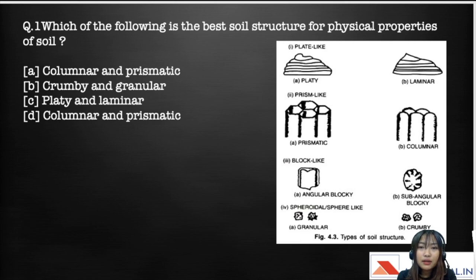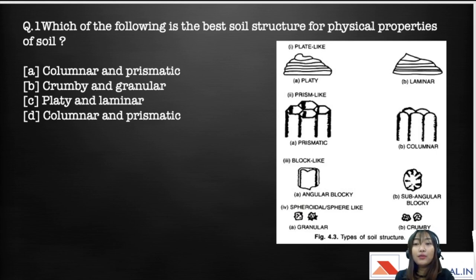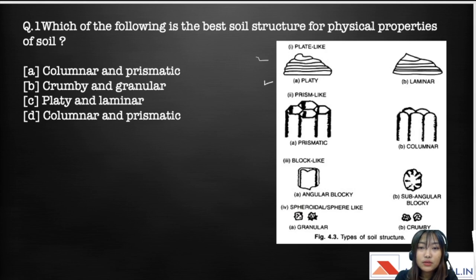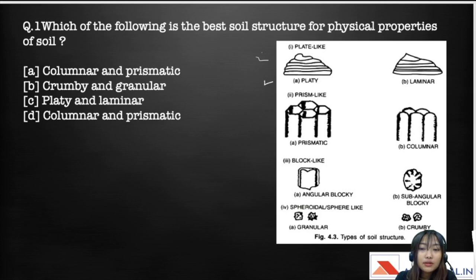The soil structure for the physical properties comes under the type of the soil. Type of soil is basically the shape or arrangement of peds — peds are the natural aggregation of the soil. In the diagram there are four types of structures: plate-like, prism-like, block-like, and spheroid or sphere-like.